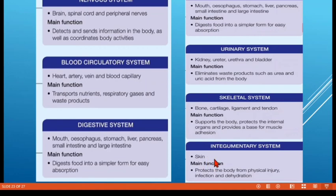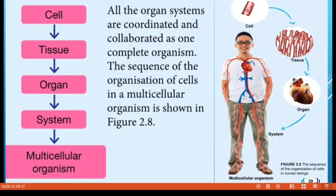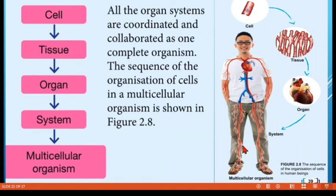The integumentary system is the skin; it protects the body from physical injury, infection, and dehydration. So for humans, we know there are five levels of organization: from cell, to tissue, to organ, to system, to multicellular organism — all coordinated and collaborating with one another to form a complete organism.